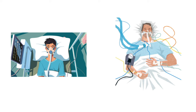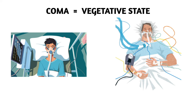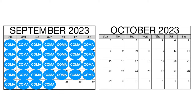Comatose and vegetative state essentially mean the same thing — it depends on the duration. Comatose is short term, maybe 30 days or less. After that, it is called a vegetative state.